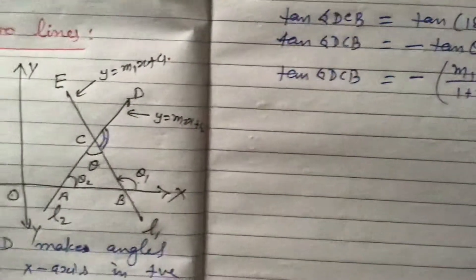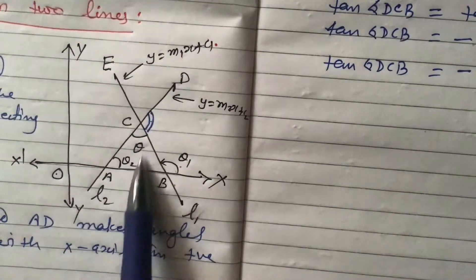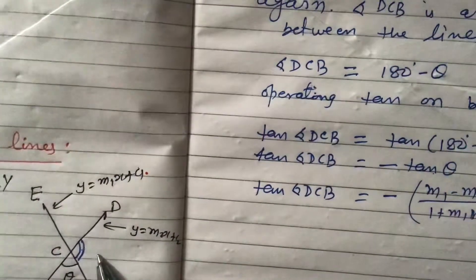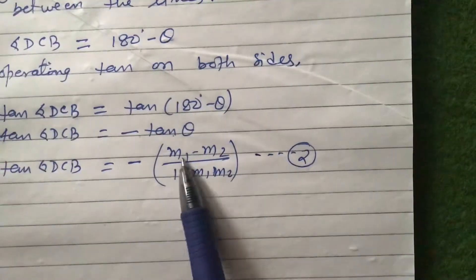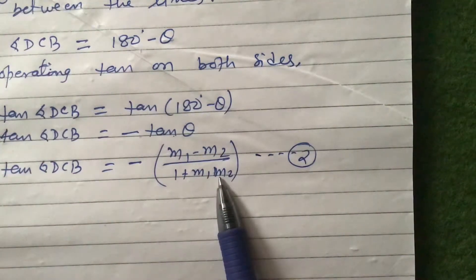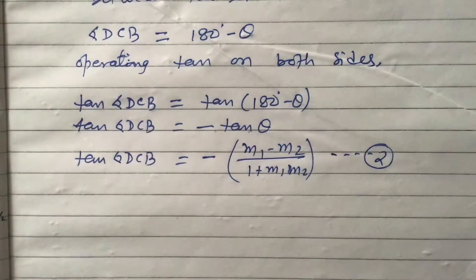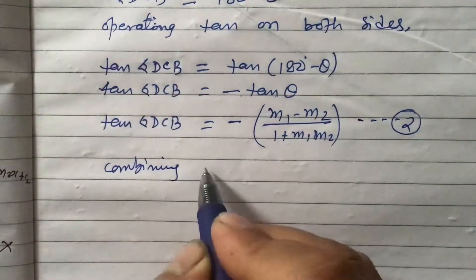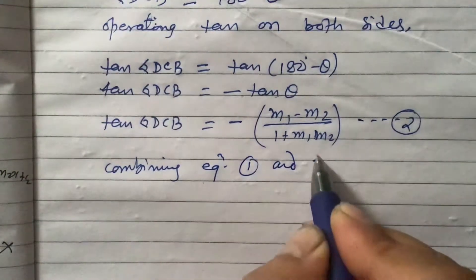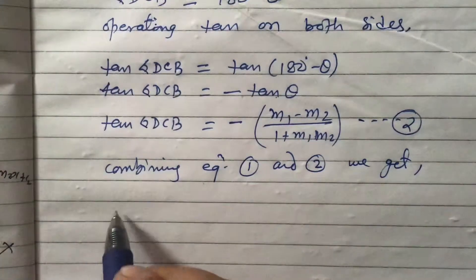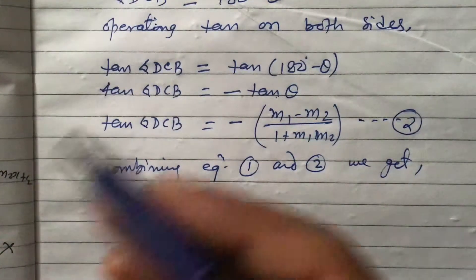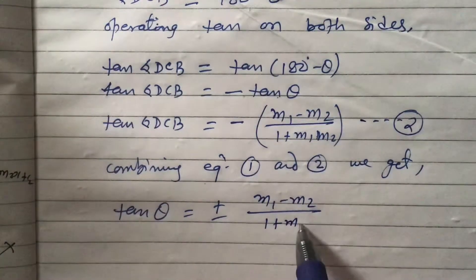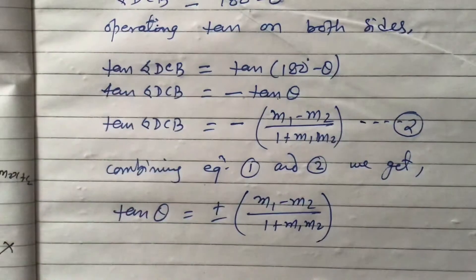One angle is the acute angle where tan(theta) is positive: tan(theta) = (m1 − m2)/(1 + m1·m2). The other angle is the obtuse angle where we get the negative value: −(m1 − m2)/(1 + m1·m2). Combining Equations 1 and 2, tan(theta) = ±(m1 − m2) / (1 + m1·m2). This is the formula to find the angle between two lines.